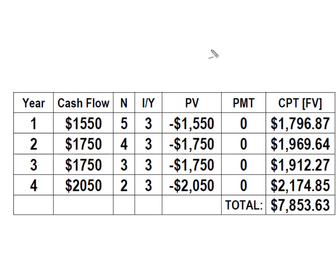So if you followed along and you actually put each one of these in, this would be the year and the cash flow. The N values are five, four, three, and two. Our interest rate never changed. Our present value changed because we had uneven cash flows. We never made any payments along the way. These are the individual future values. And all I did was sum all of these up together. So I know in year six, this series of cash flows here will be worth $7,853.63.